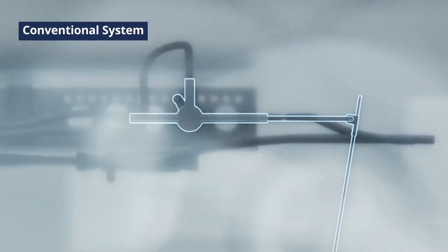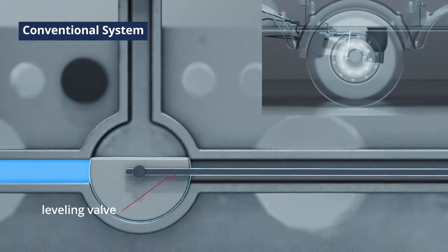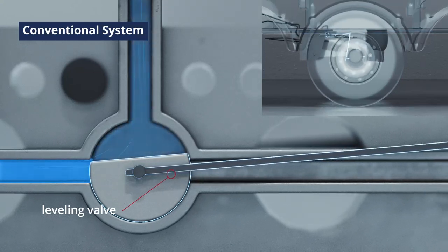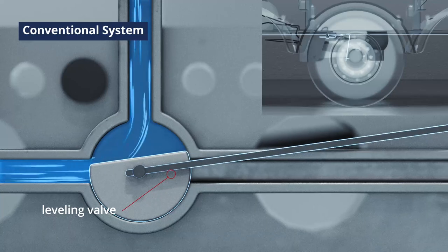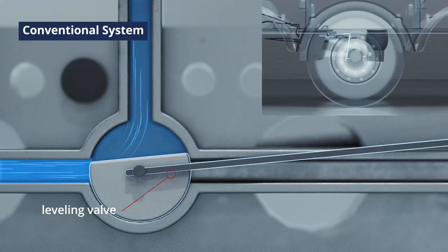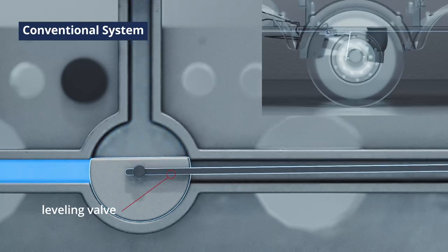The conventional system uses a levelling valve to regulate the air suspension's bellows. Whenever the trailer's height dips too low, the levelling valve opens, allowing air pressure to enter the bellows. When the trailer reaches its riding height, the valve closes.